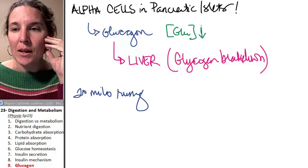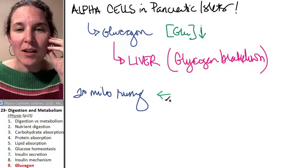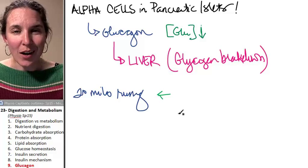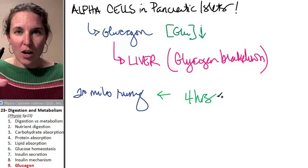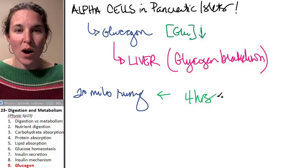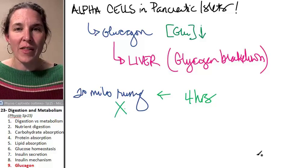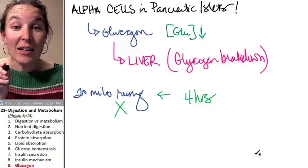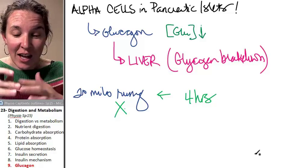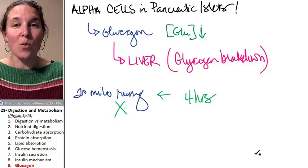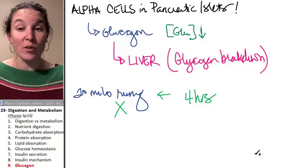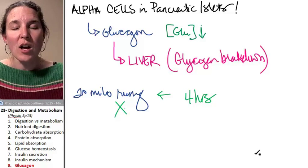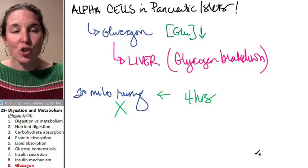If you secrete glucagon for four hours, just dump glucagon chronically into your blood for four hours, you will deplete all of that. All the glycogen stores will be broken apart and dumped into the blood in the form of glucose after just four hours. The point is that it's extremely potent.